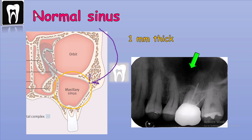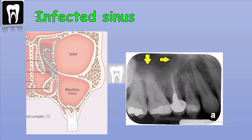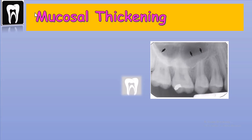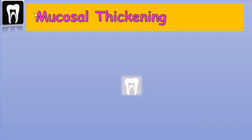The normal sinus membrane is only one millimeter thick and is not seen in radiograph images. But when inflammation starts, it can increase about 10 to 15 times — this is called mucosal thickening — and now it is visible in the radiograph, appearing as a radiopaque strip parallel to the sinus wall.